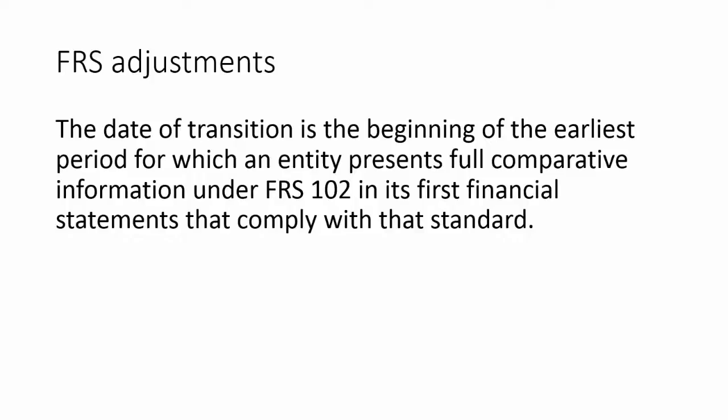The date of transition is the beginning of the earliest period for which an entity presents full comparative information under FRS 102 in its first financial statements that comply with that standard. For example, if a company's first FRS 102 financial statements are to be prepared at 31st December 2015, the date of transition would typically be 1st January 2014. It's therefore the balance sheet as at 31st December 2013 that will form the basis for the opening figures as at the transition date.